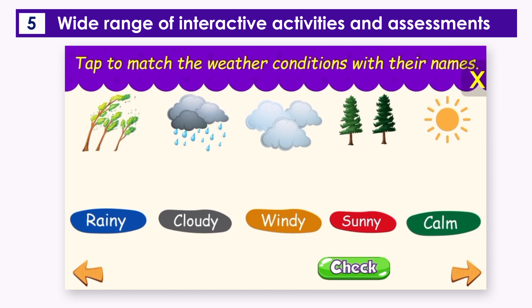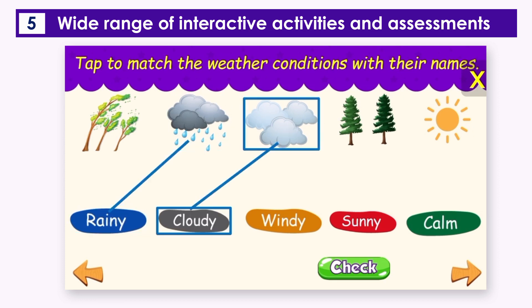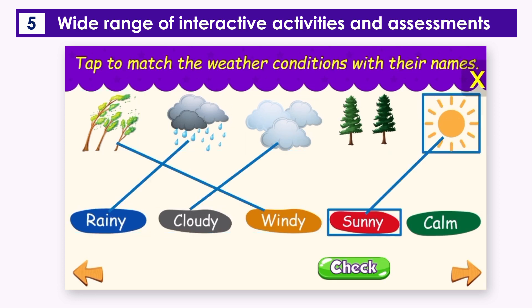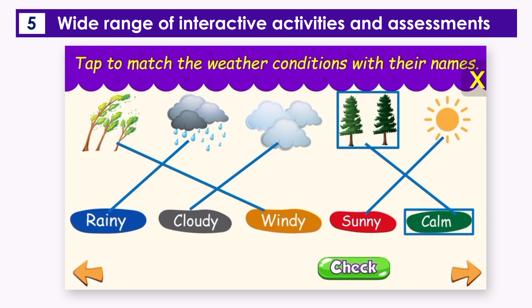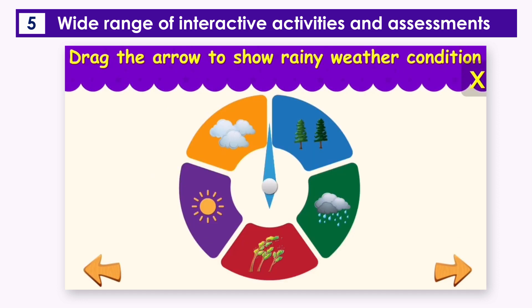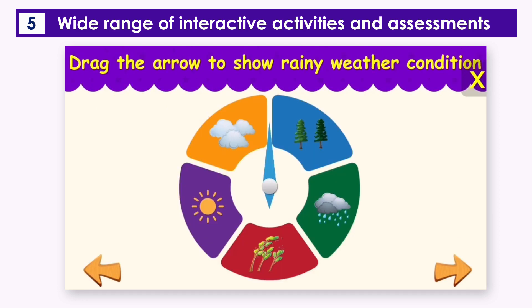Activity one — tap or click to match the weather symbols with their names. Keep it up! Drag the arrow to show rainy weather condition.